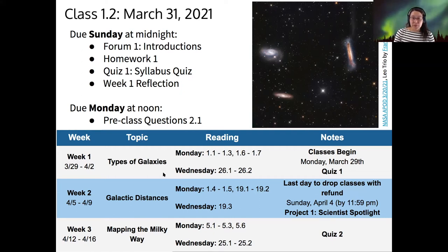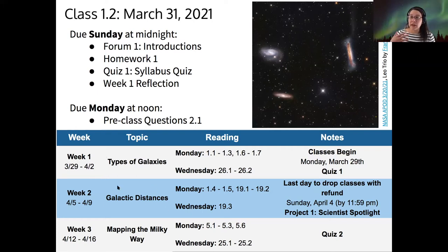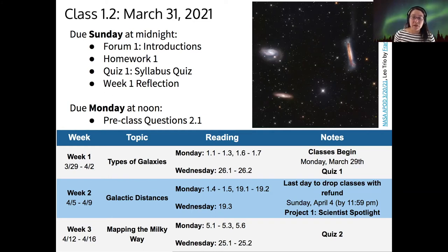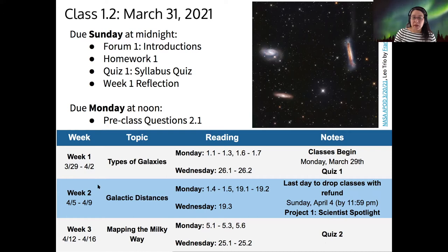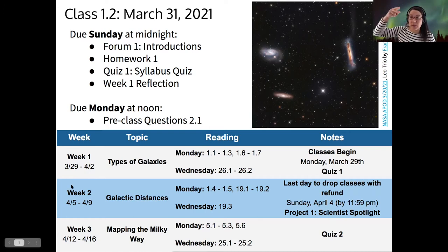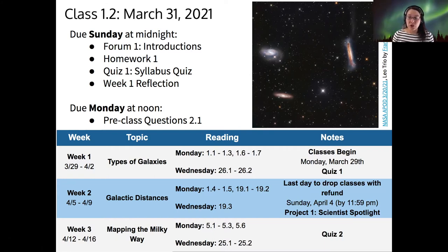Looking forward today, we're going to finish talking about different types of galaxies. Then in week two, we're going to talk about how we actually calculate the distances to those galaxies and what galactic distance and size scales are like. During week two you'll have your first project. Quiz two will cover weeks one plus two, so all the quizzes will cover the previous two weeks of class, giving you a full week to digest new information before you're quizzed on it.